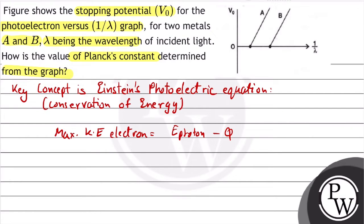Now, stopping potential eV0 - the work done by the stopping potential is equal to maximum kinetic energy. So we have work done by stopping potential, and maximum kinetic energy of electron equals the stopping potential. eV0 should equal half mv max squared.